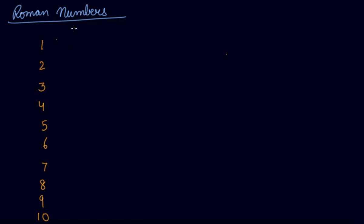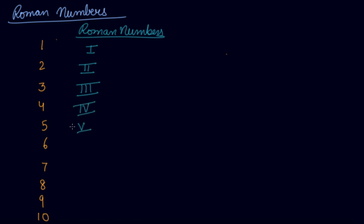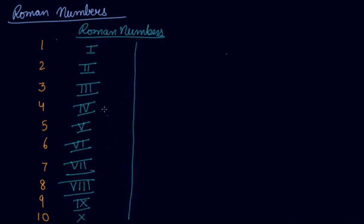If we have to write 1 in Roman numbers, we write it as I. This is 2, this is 3, this is 4, this is 5, 6, 7, 8, 9, and 10. This is how we write Roman numbers for the first 10 digits. Your 1 is written as I in Roman numbers, your 5 is written as V, and 10 is written as X.